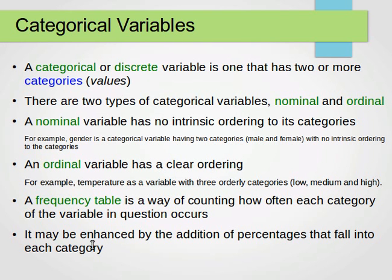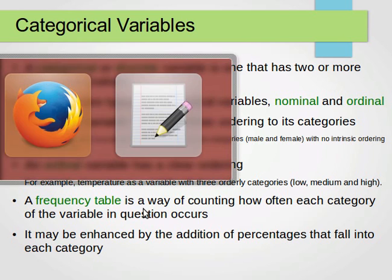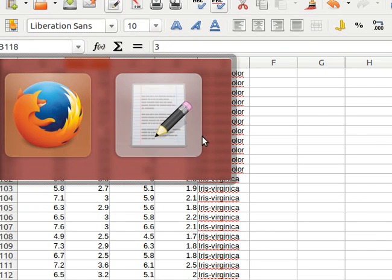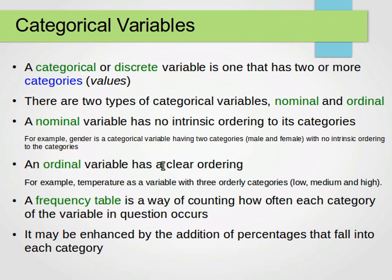This kind of data can be enhanced by using percentages. For the 50-50-50 counts out of 150, we can express each as 33.3 percent.